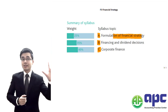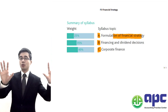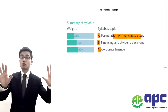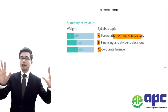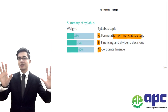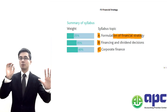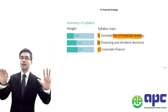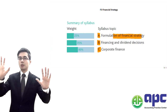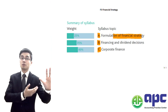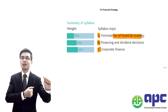The accounting equation means assets equal liabilities plus equity. Assets represent the investment decisions we're going to make. Equity plus liabilities represent the financing decisions — we get finance from equity or debt, and we use that money to invest in the assets we're pursuing.